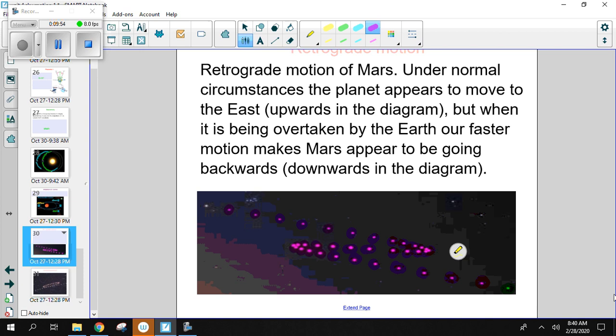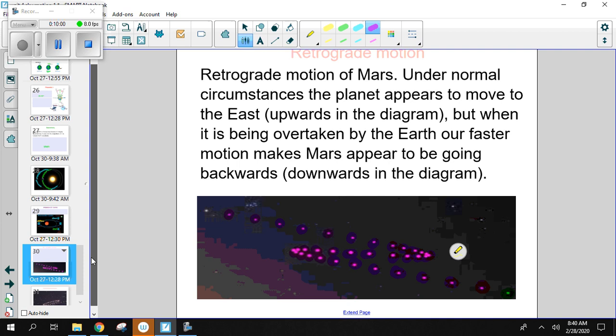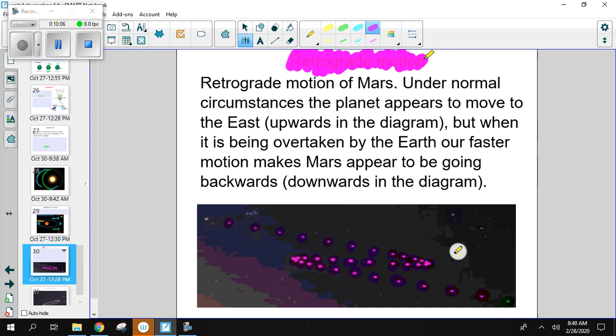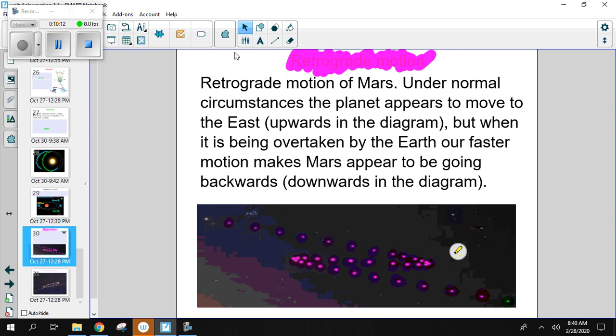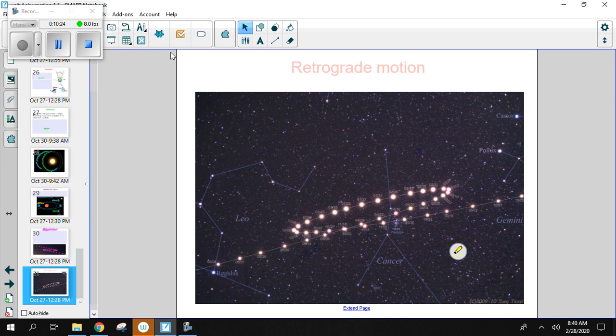And this messed with scientists for the greater part of a thousand years. We were like, what the heck is going on with Mars and Venus? How could this possibly happen? And Tycho and Ptolemy came up with these crazy epicycles to try to explain this. But what was happening is, hey, here's Mars going through on its time. We're passing it. So it looks like it's moving backwards. But in reality, we're just passing it.